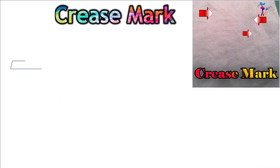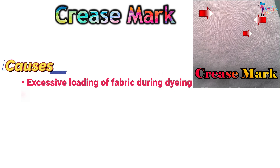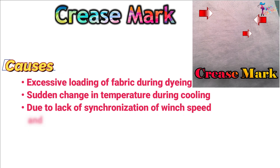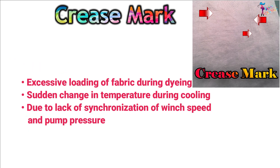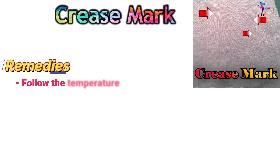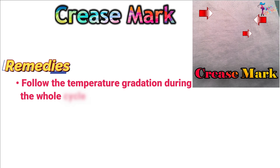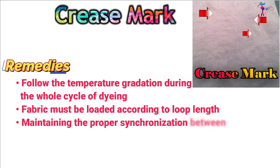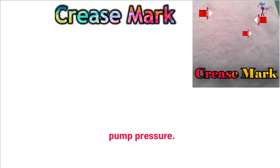Crease Mark. Causes: Excessive loading of fabric during dyeing, sudden change in temperature during cooling, and due to lack of synchronization of winch speed and pump pressure. Remedies: Follow the temperature gradation during the whole cycle of dyeing, fabric must be loaded according to loop length, and maintain proper synchronization between the winch speed and pump pressure.